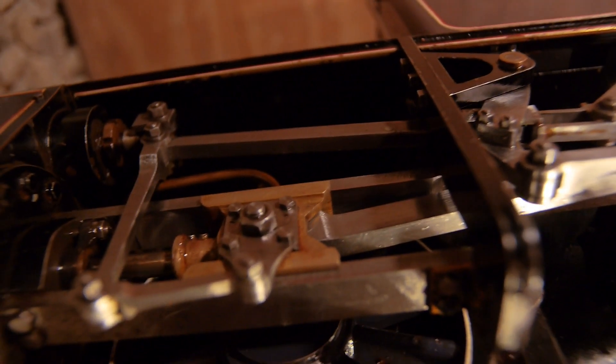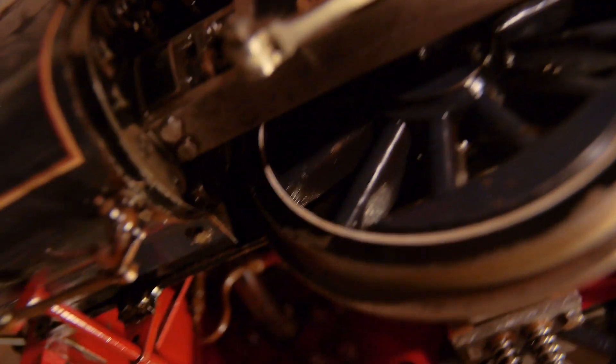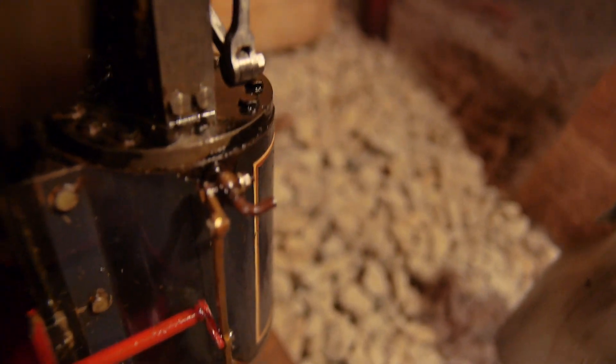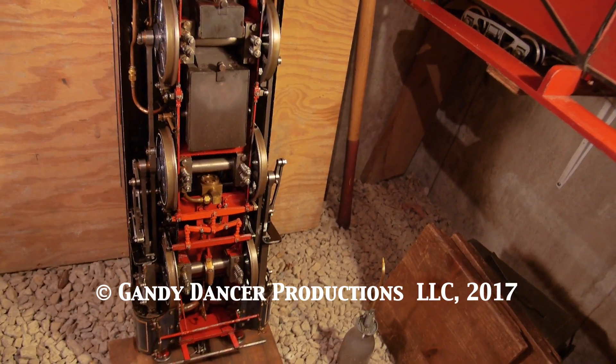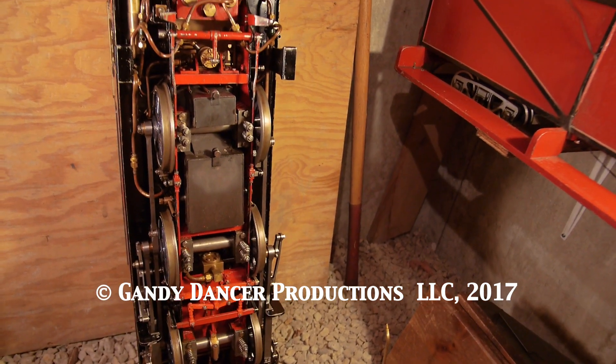This is looking up at the cross head from underneath. And that's the cylinder drain cock operating mechanism. So that's all the underneath of the steam engine. It's a lot more complicated just because of the pipe work.